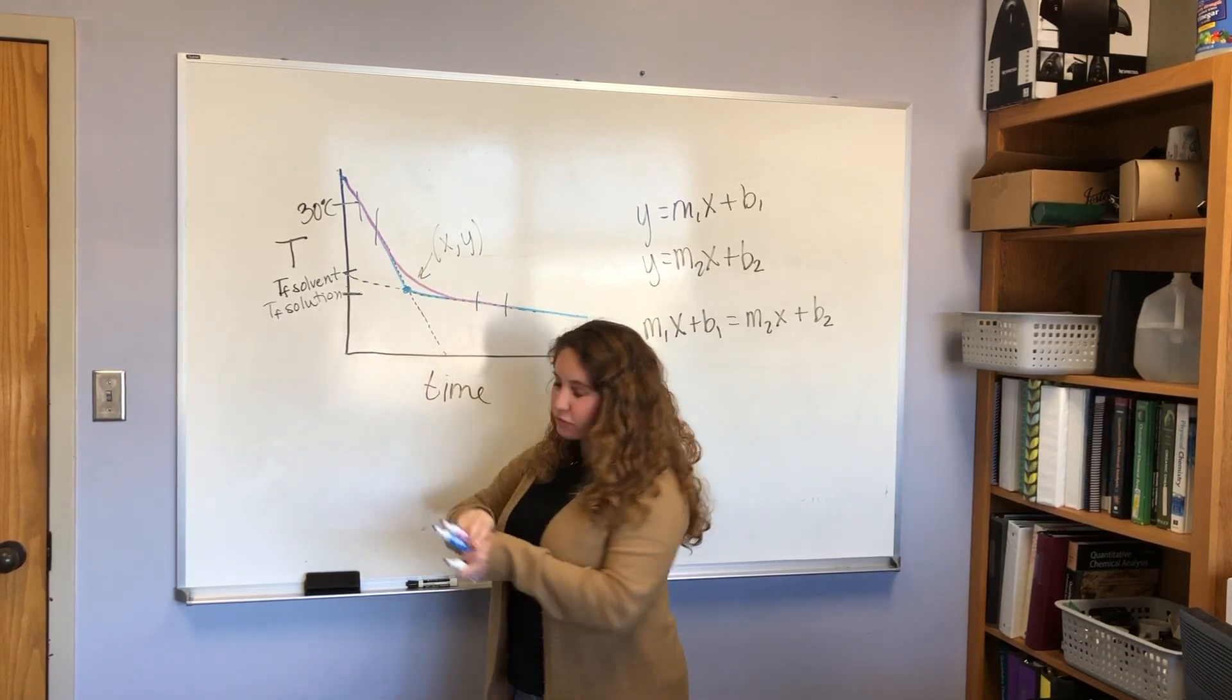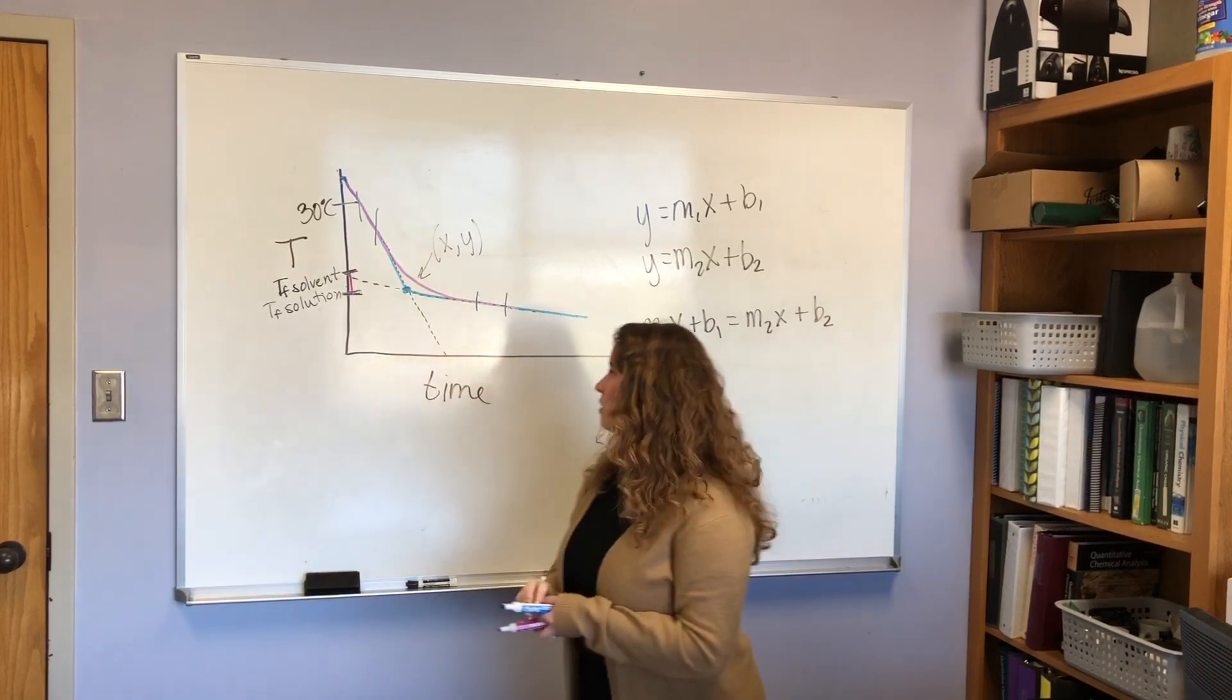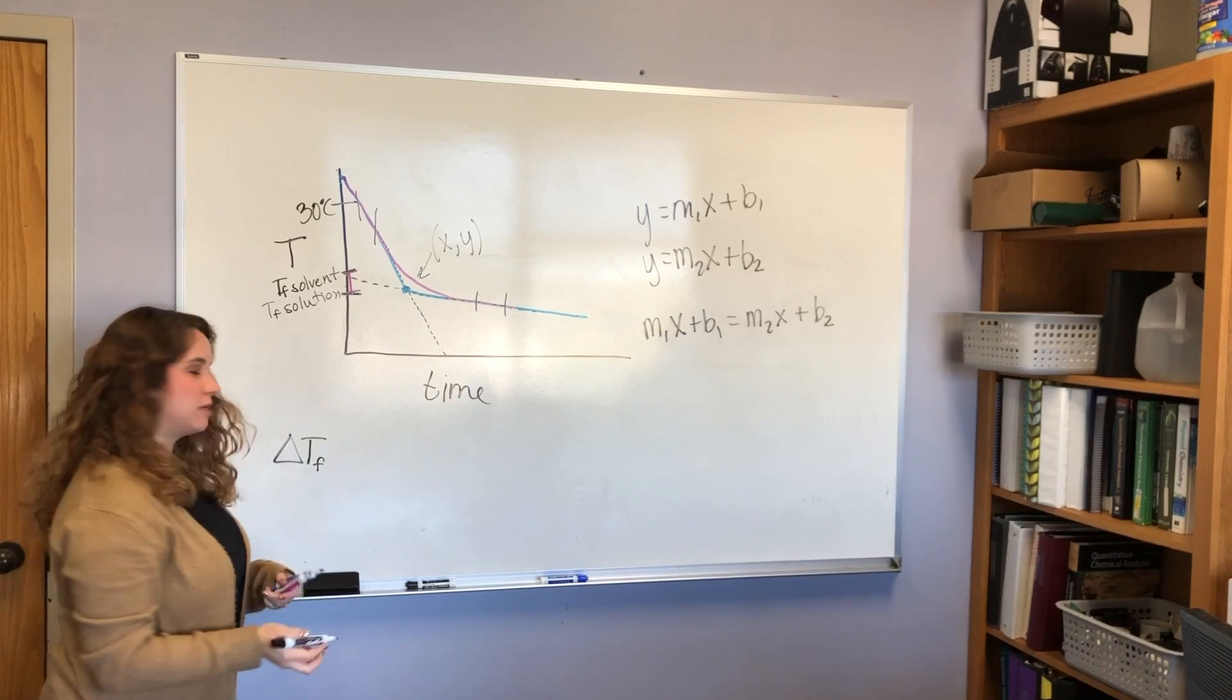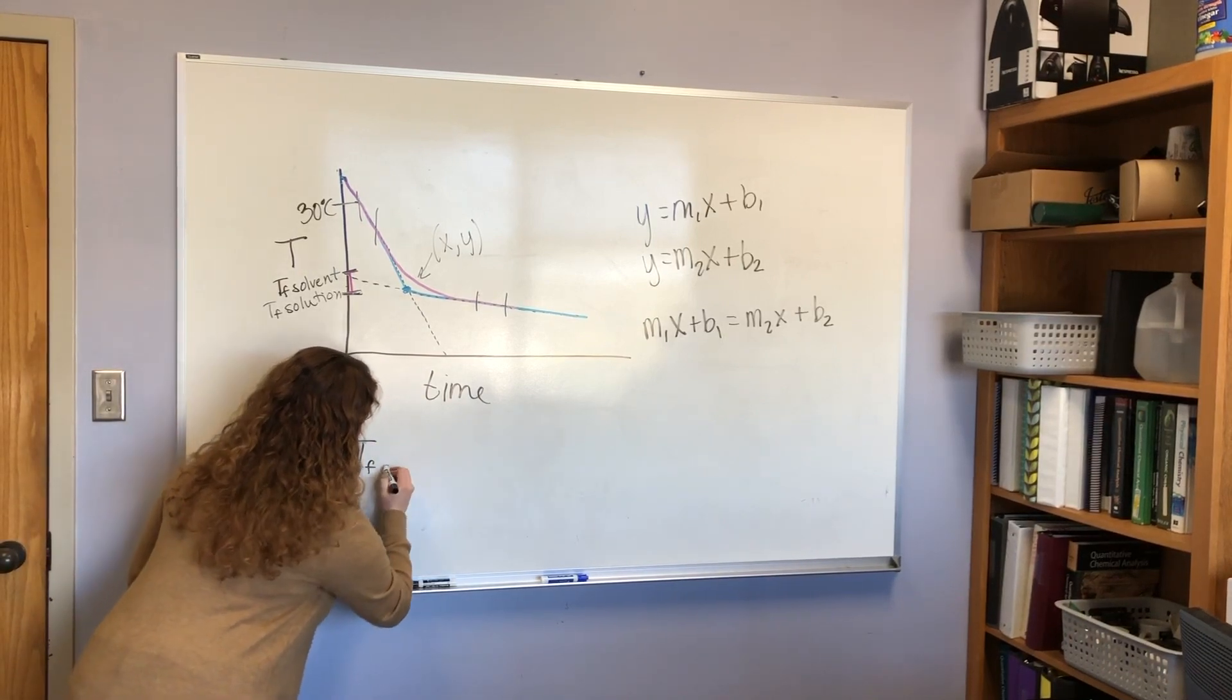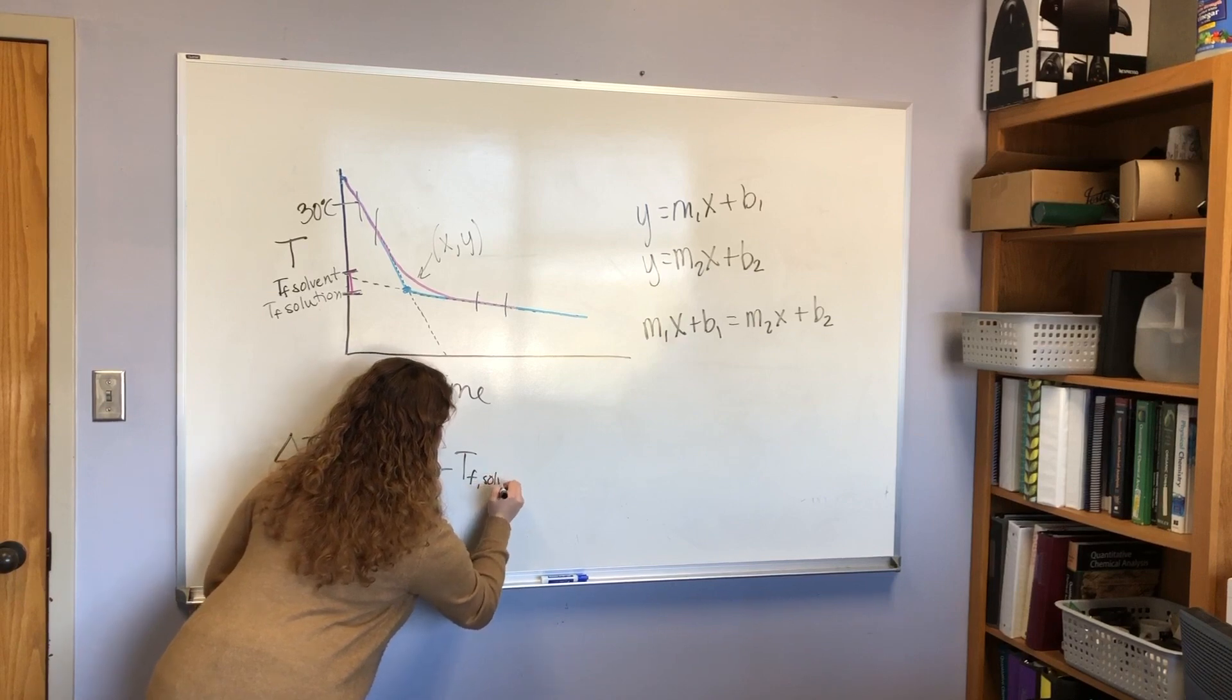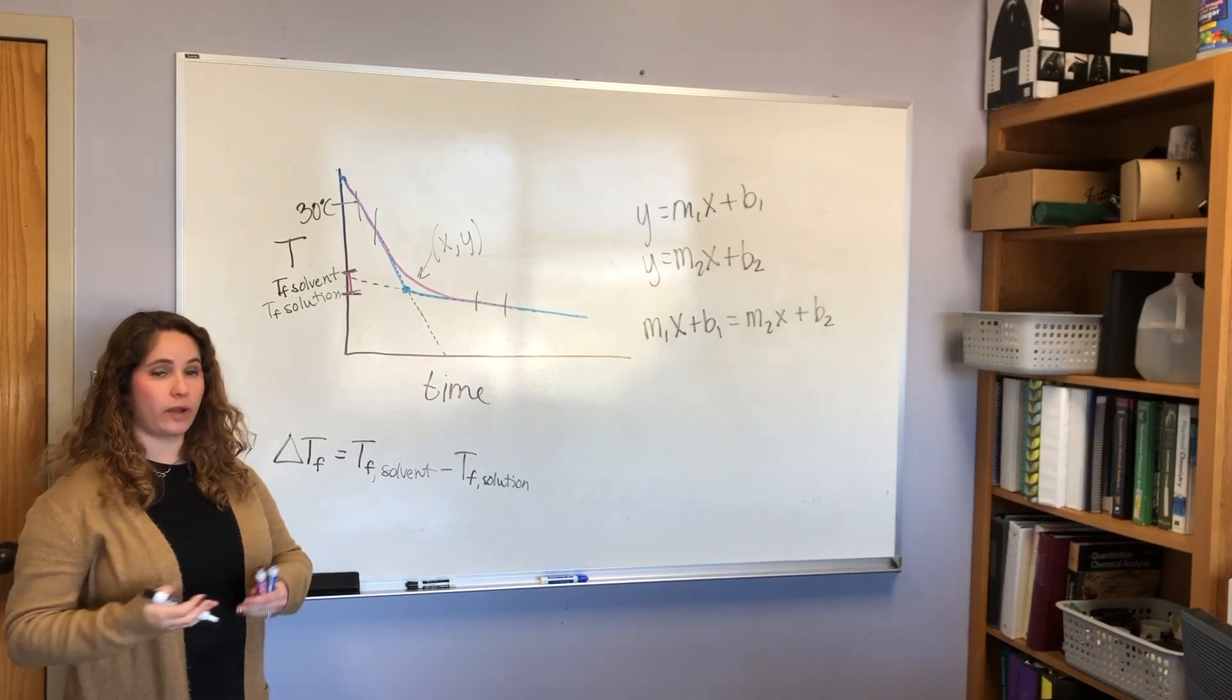Now, we're looking for the freezing point depression overall. And the freezing point depression is going to be the difference between these two freezing points. So freezing point depression, we use the symbol delta Tf indicating a change in freezing points. So that's going to be the Tf of your solvent because it's a higher number minus the Tf of your solution.